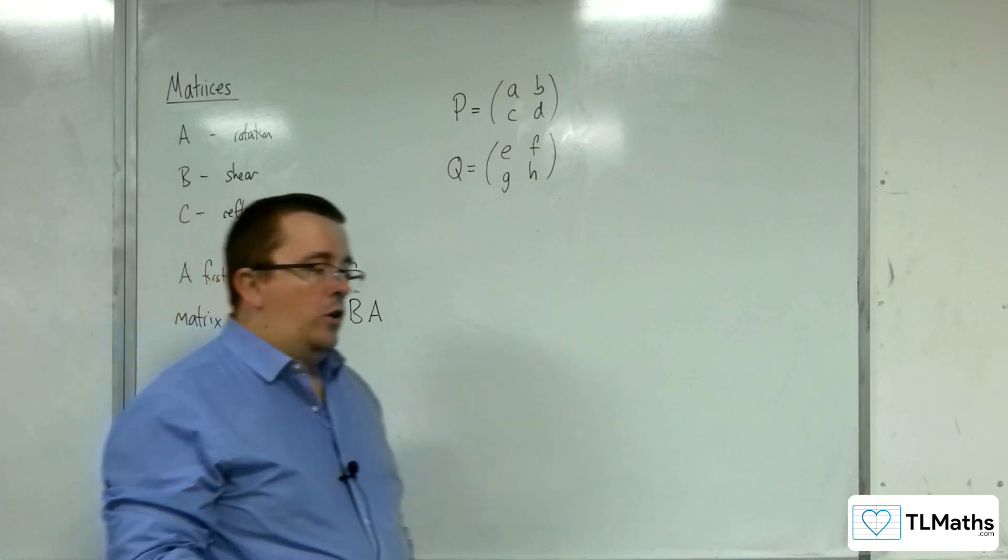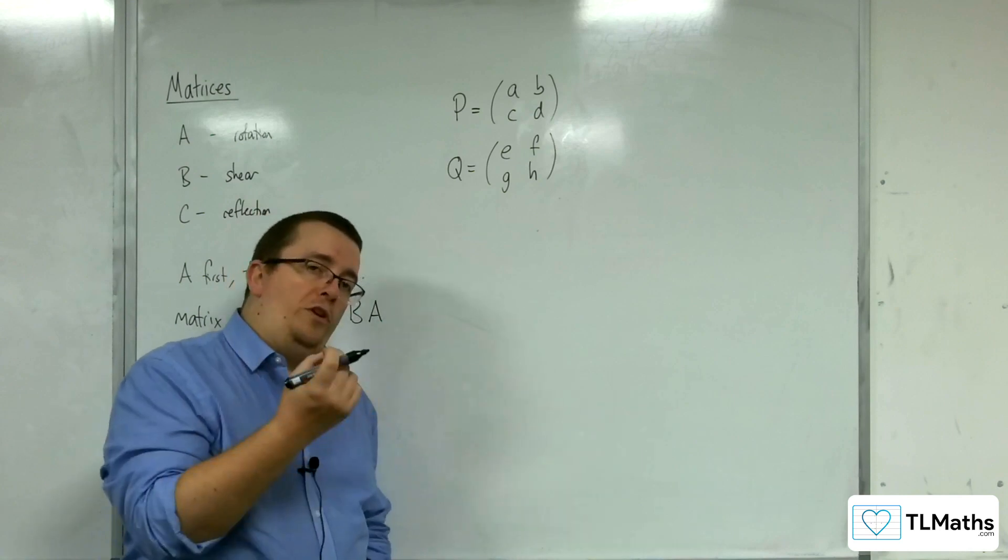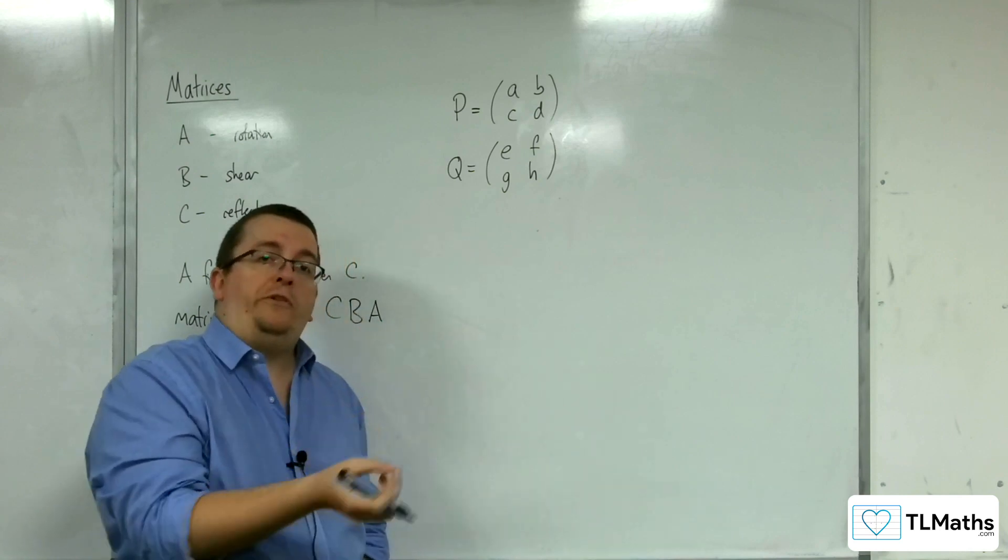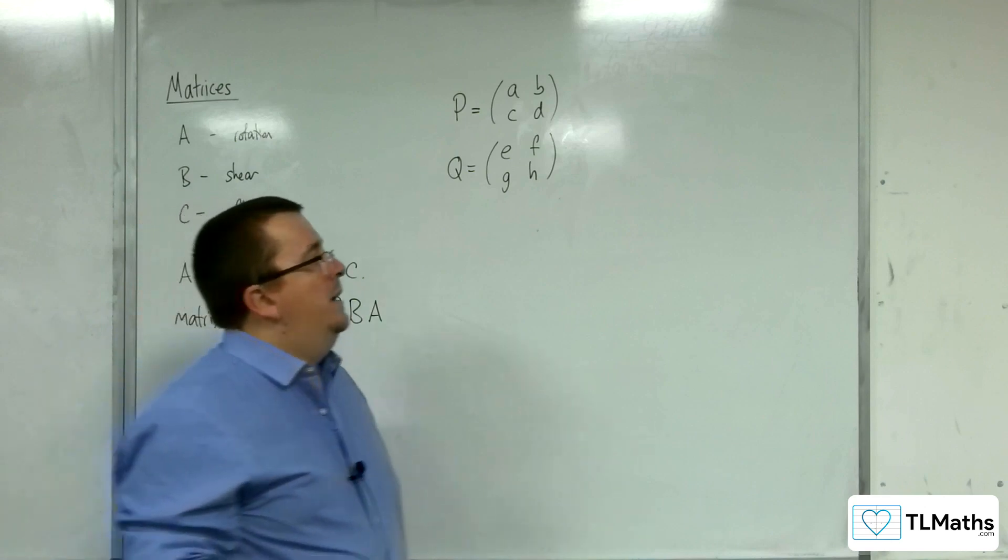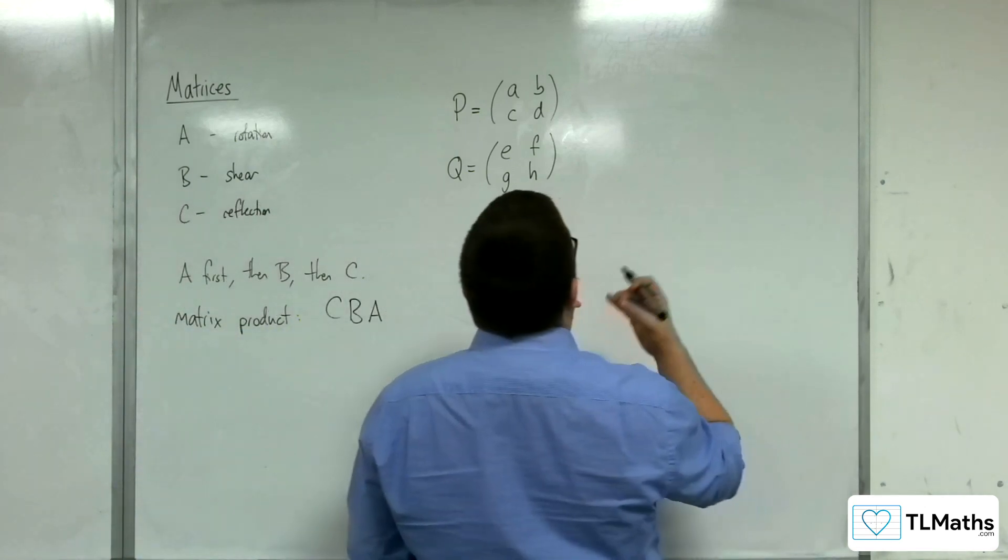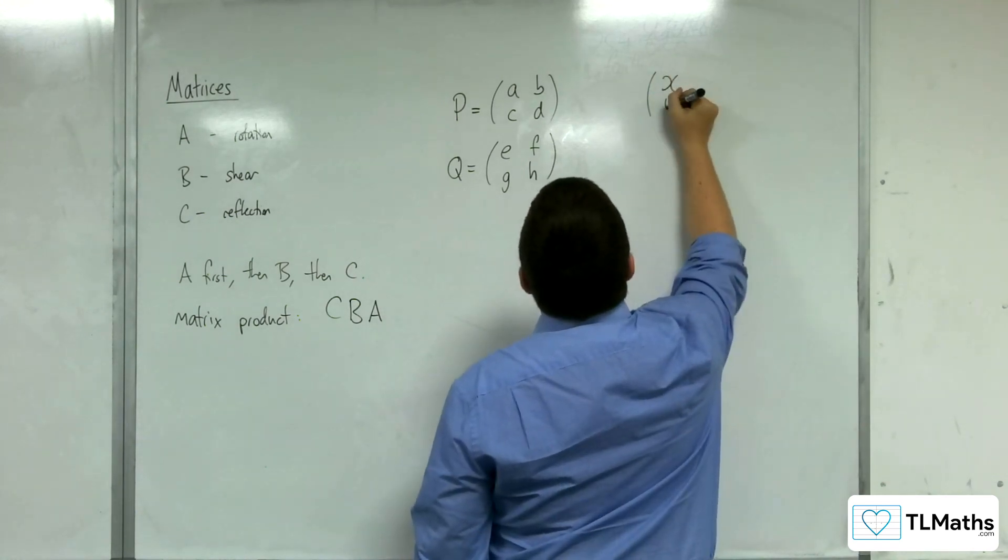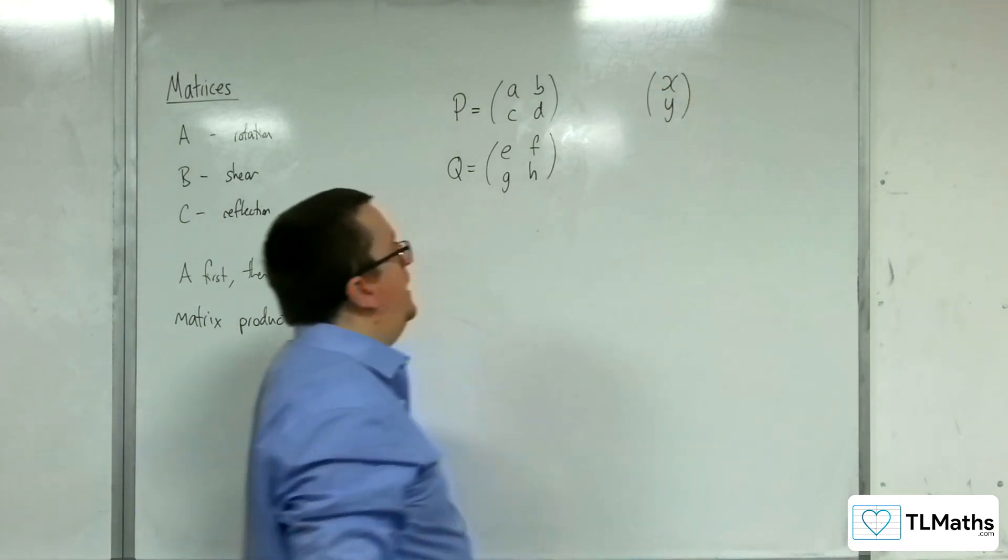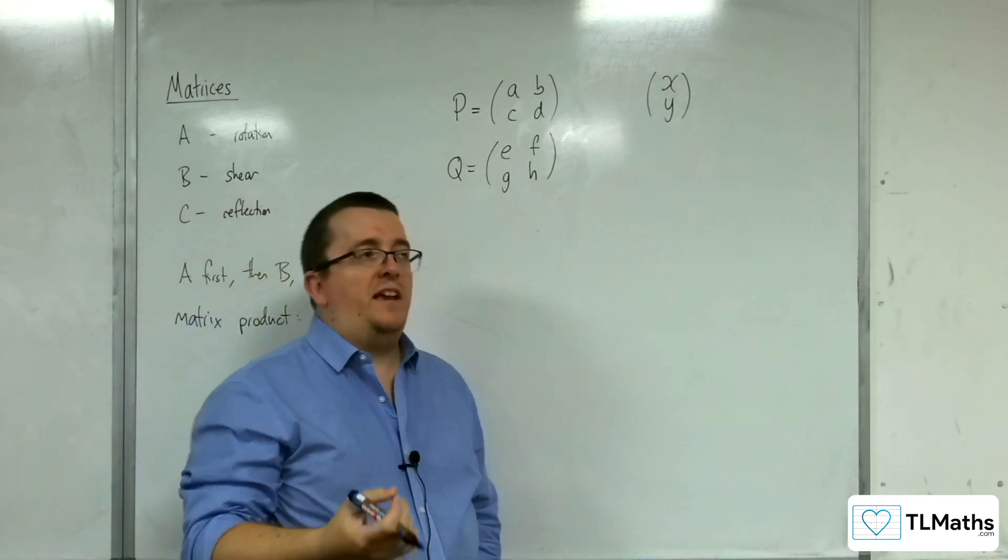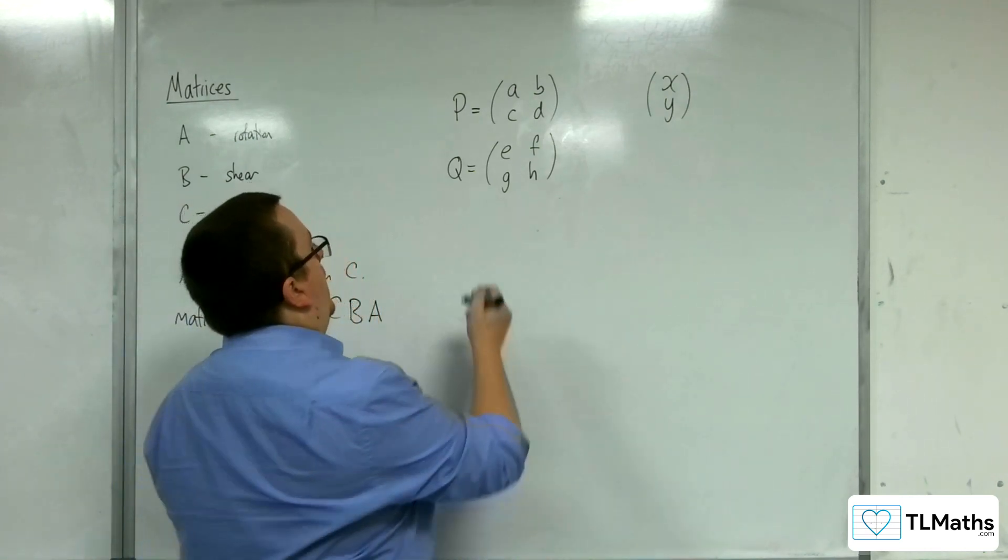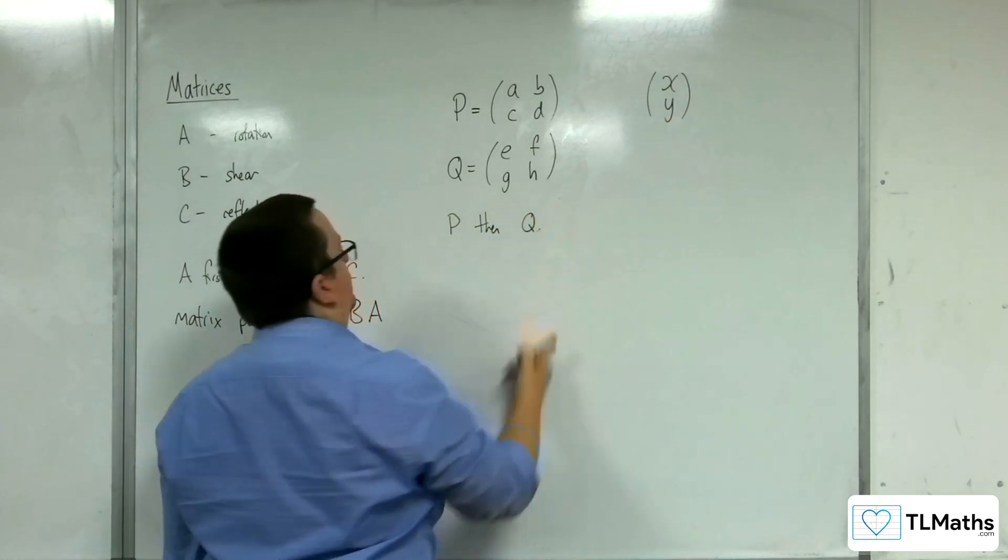So let's say I've got a pair of coordinates. This might be the corner of my rectangle I keep on using in my examples, or a corner of another shape. And we're going to call those coordinates X, Y. Now let's say I'm going to apply and do P, then Q.